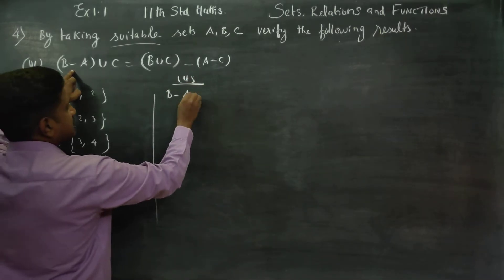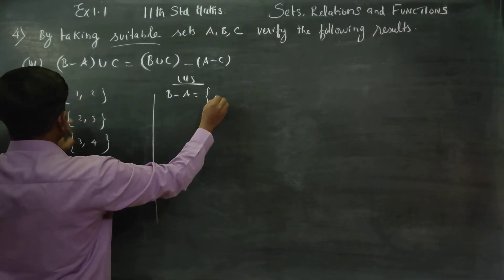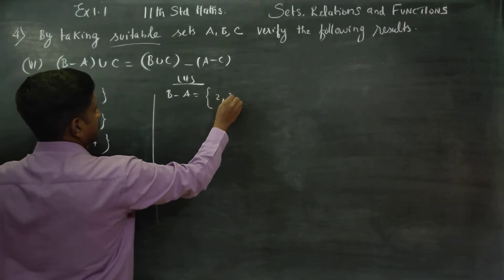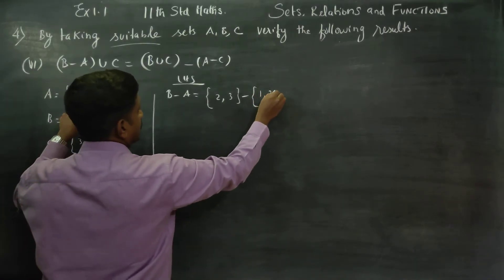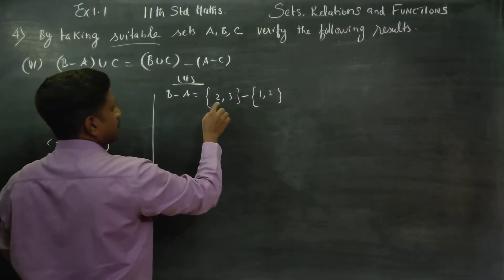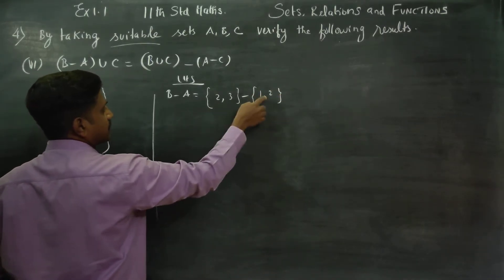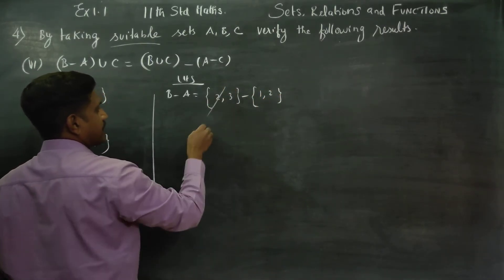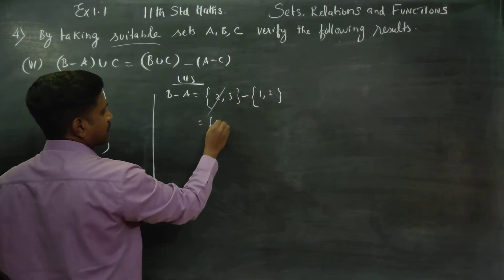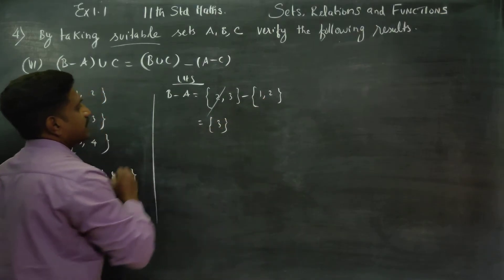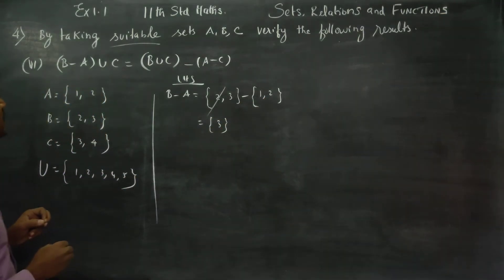B minus A means my B set is {2, 3} minus my A set is {1, 2}. The element 2 is in A, so 2 is removed. Element 3 is not in A, so 3 remains. There is my B minus A result: {3}.